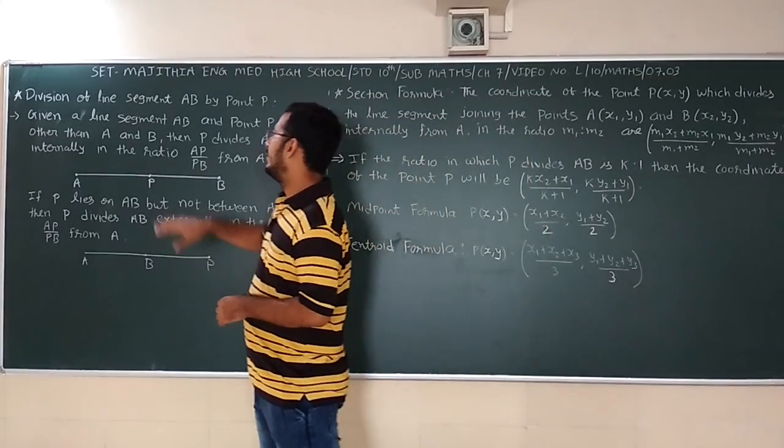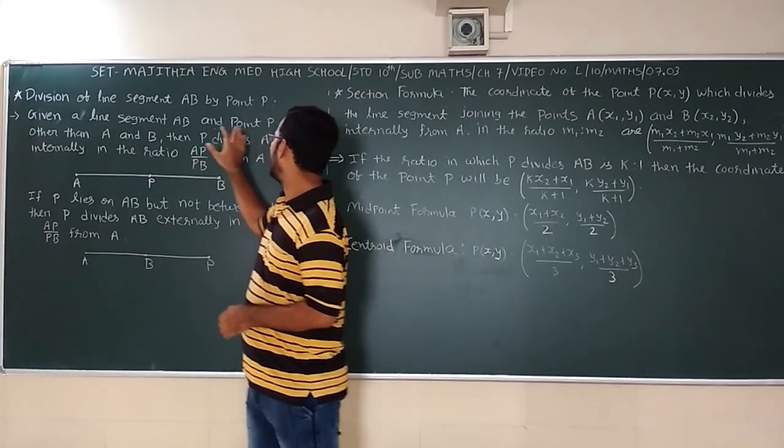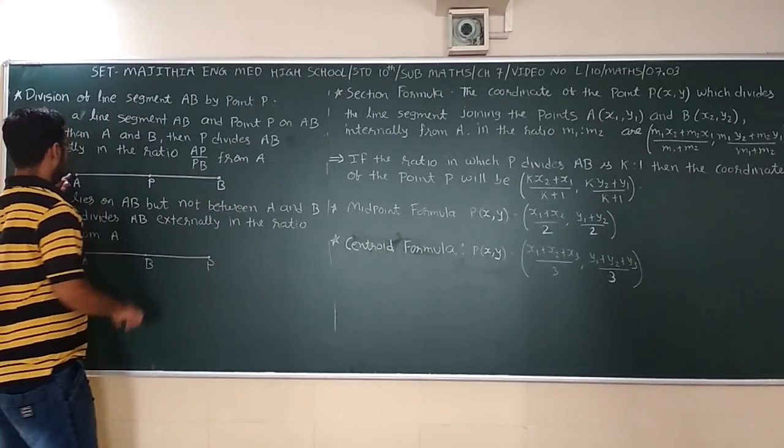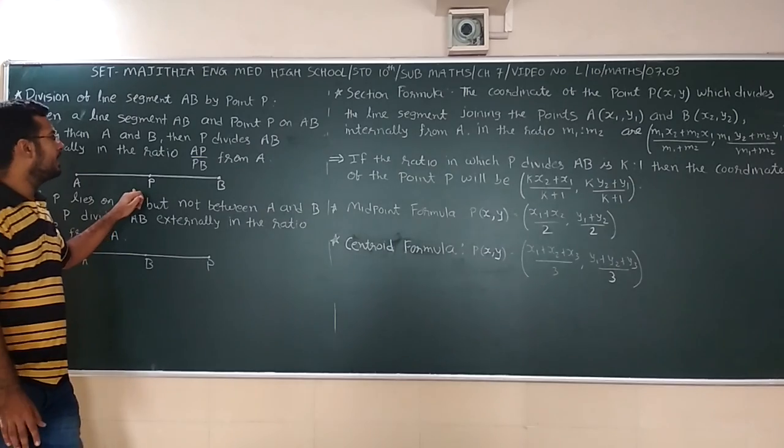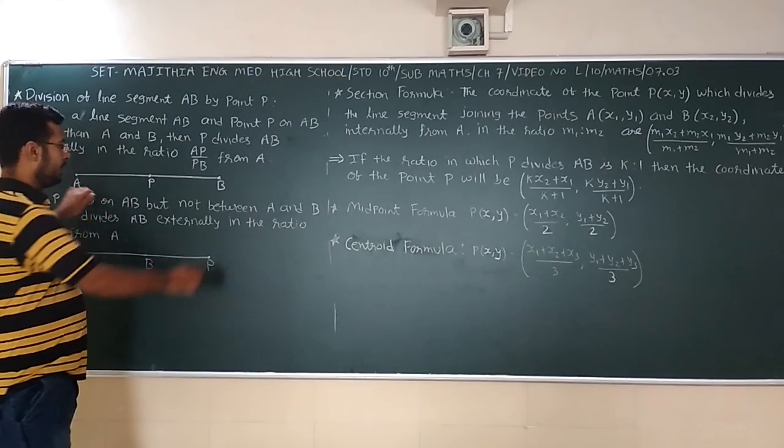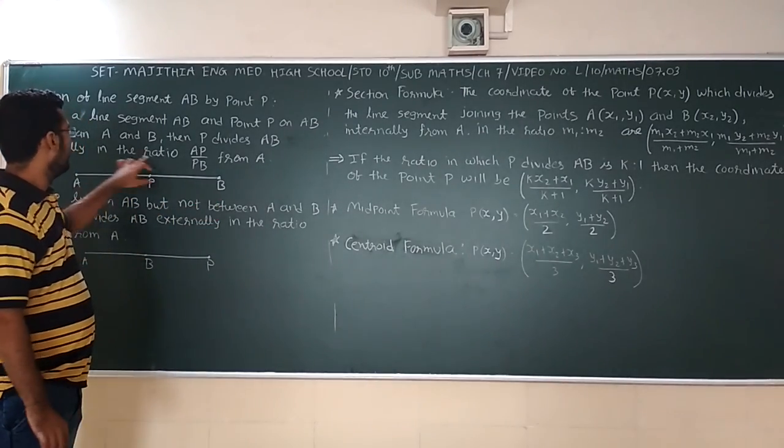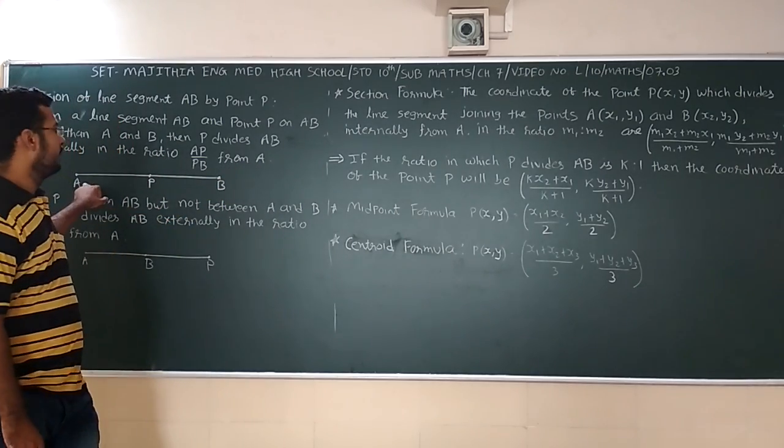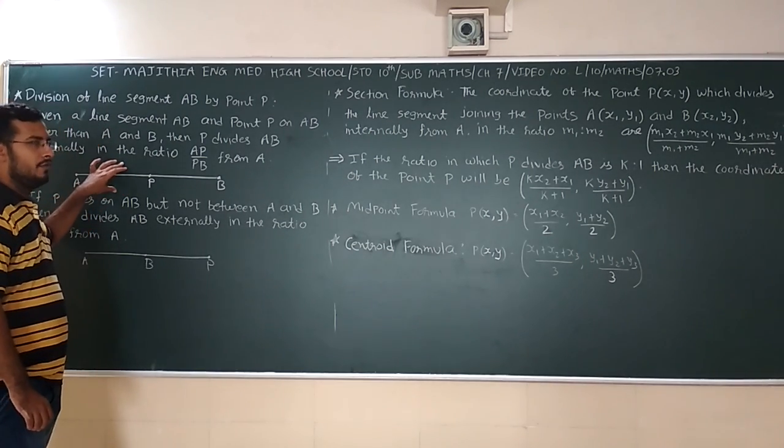So here first, division of line segment AB by point P. In that there is one line segment and point P on AB, other than A or B. It means P is not on A or B, it is in between or any other. Then P divides AB internally, internal means it is in between. So it says internally in the ratio AP upon PB from A. So this figure, this line segment shows the description of this figure.